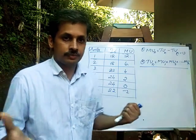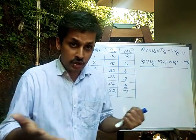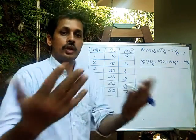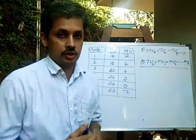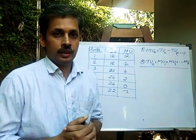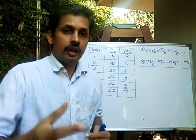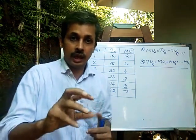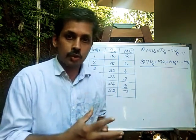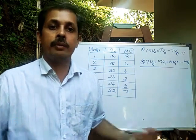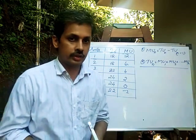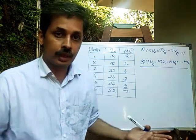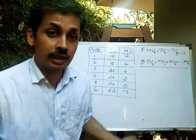We can measure the satisfaction that we derive from a commodity using numbers. There are two measurements: total utility and marginal utility.